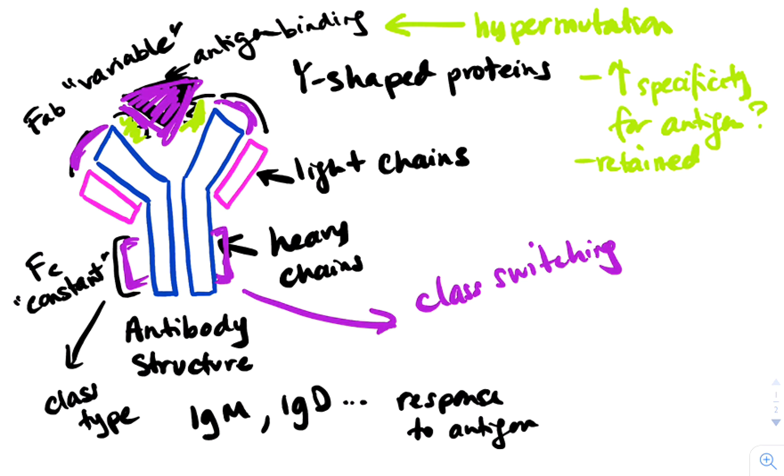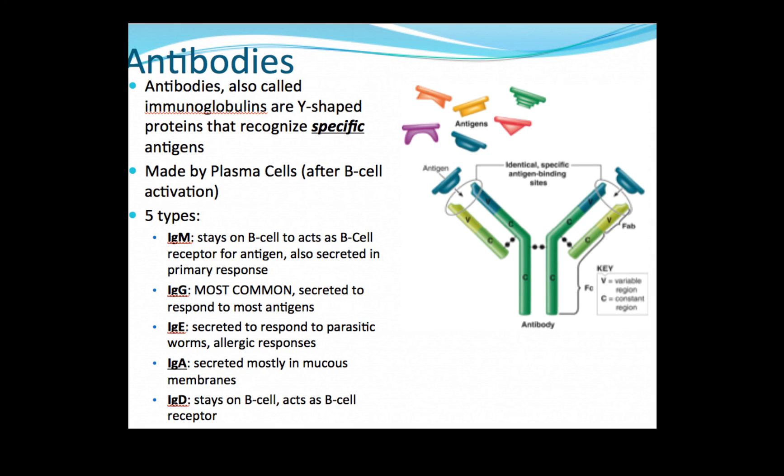But you would switch from, say, an IgM to a different class, say an IgG, by swapping out portions of the FC region. In that case, you can respond differently to the same antigen based on the antibody class.